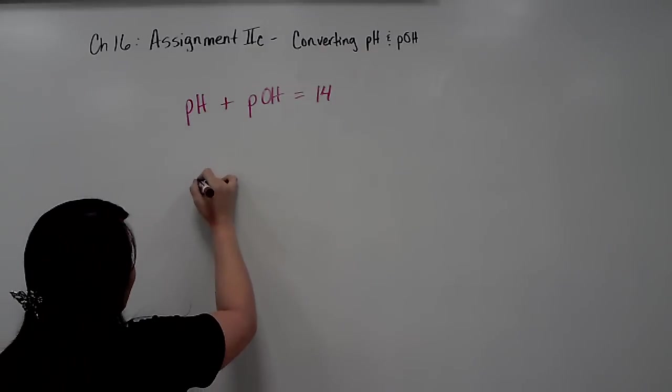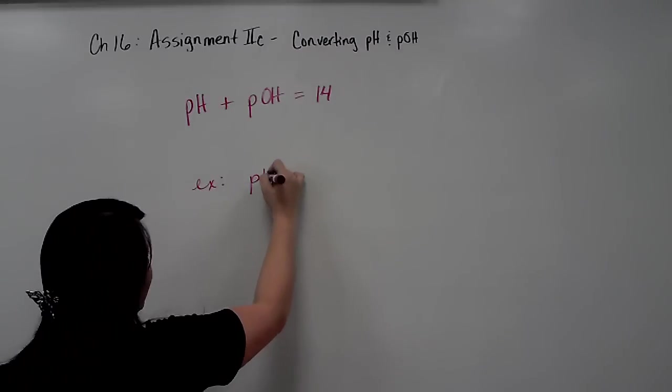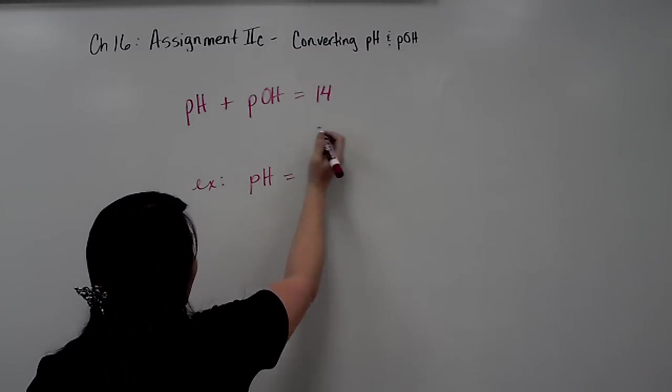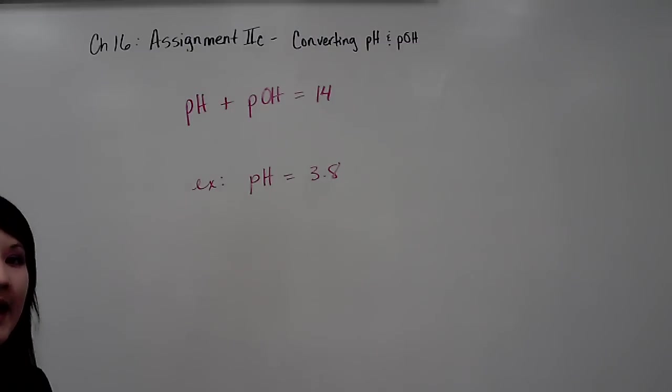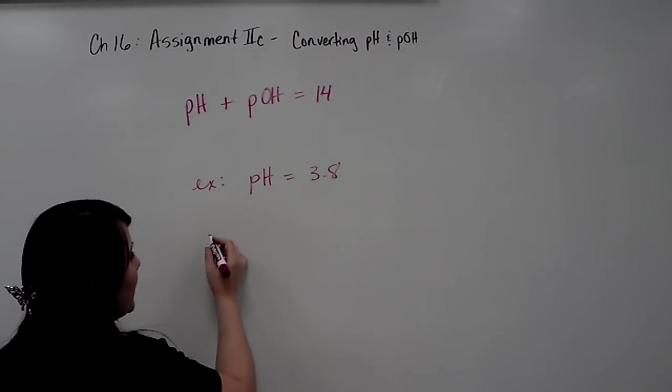So if you are given, for example, a pH equal to 3.8, which we know to be an acid, then you can plug it into the equation to solve for the pOH.